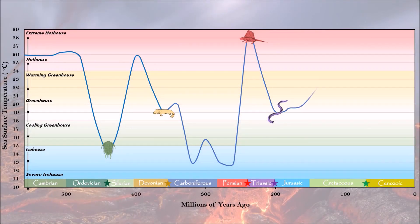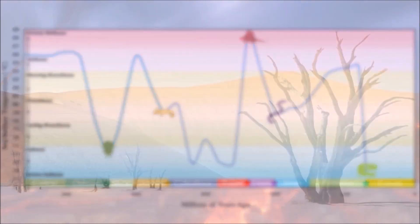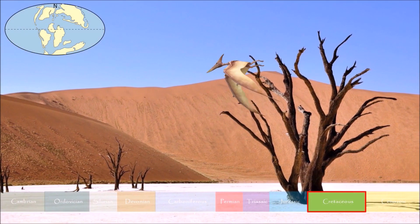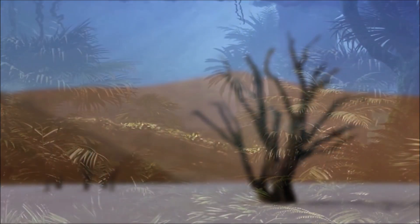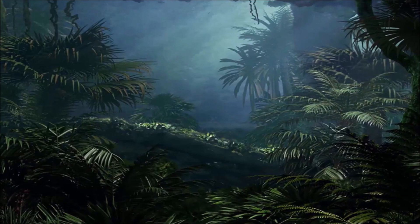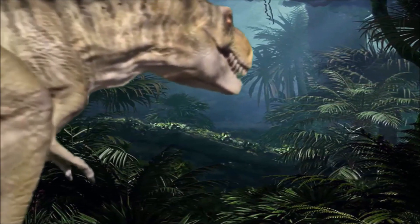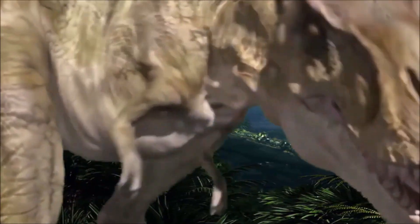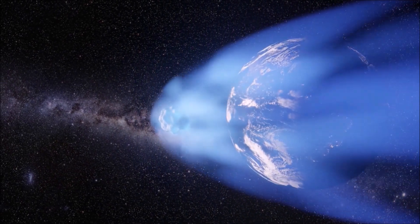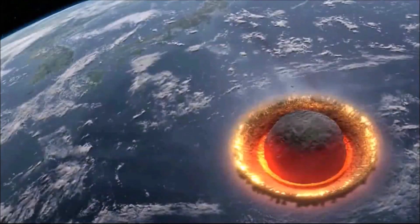Approximately 130 million years after the events of the end-Triassic, the most well-known extinction took place. Dinosaurs dominated land in the wake of the Triassic-Jurassic extinction. However, their reign came to an abrupt end around 66 million years ago at the Cretaceous-Paleogene boundary, when 75 percent of all species, including the non-avian dinosaurs, were eradicated. The main cause of this event was a large asteroid collision that instantly ejected enough dust and sulfate aerosols into the atmosphere to plunge the world into darkness.